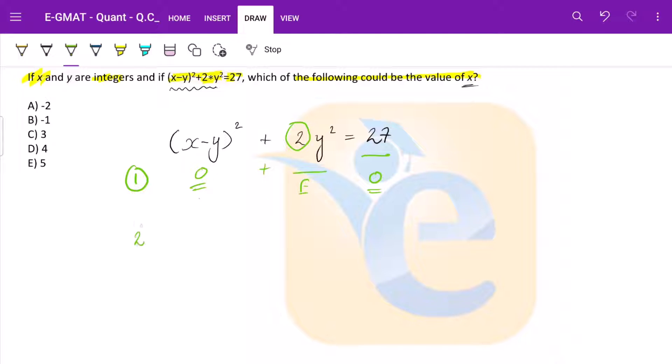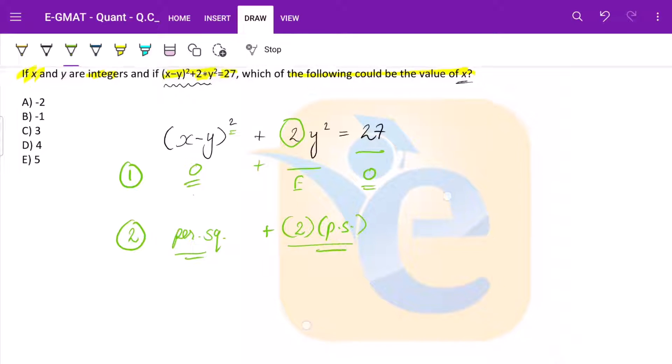Let us move on to our second set of inferences. This is a perfect square. This should be a perfect square and this should be 2 times a perfect square.